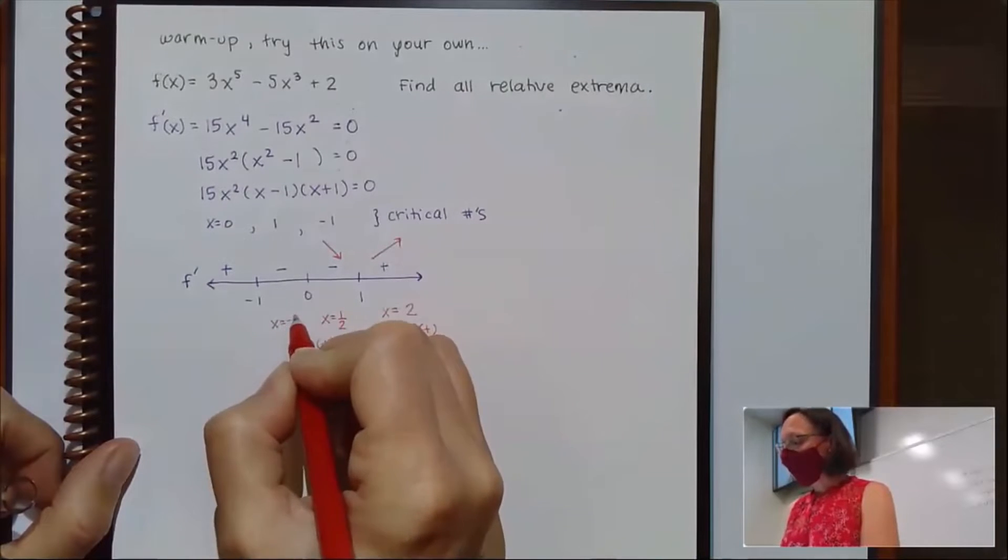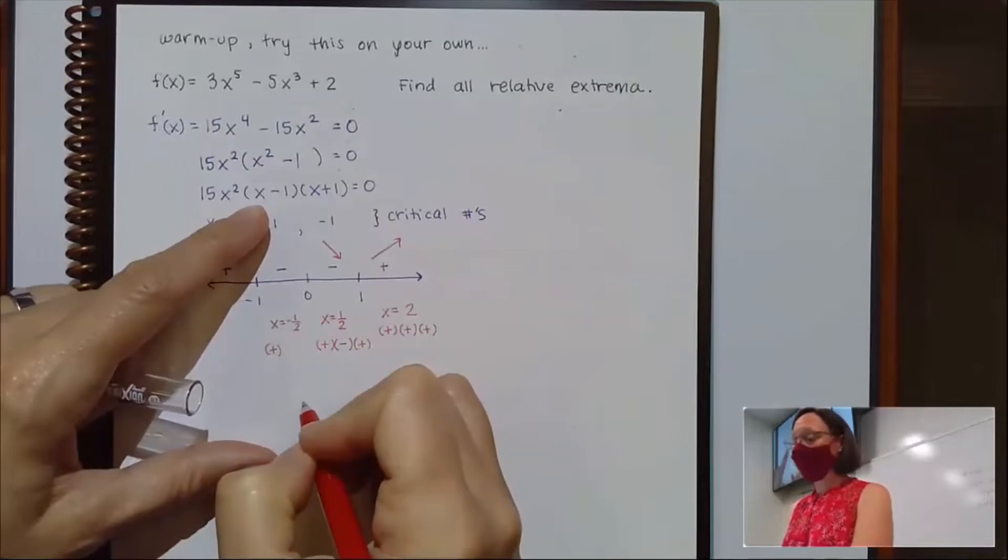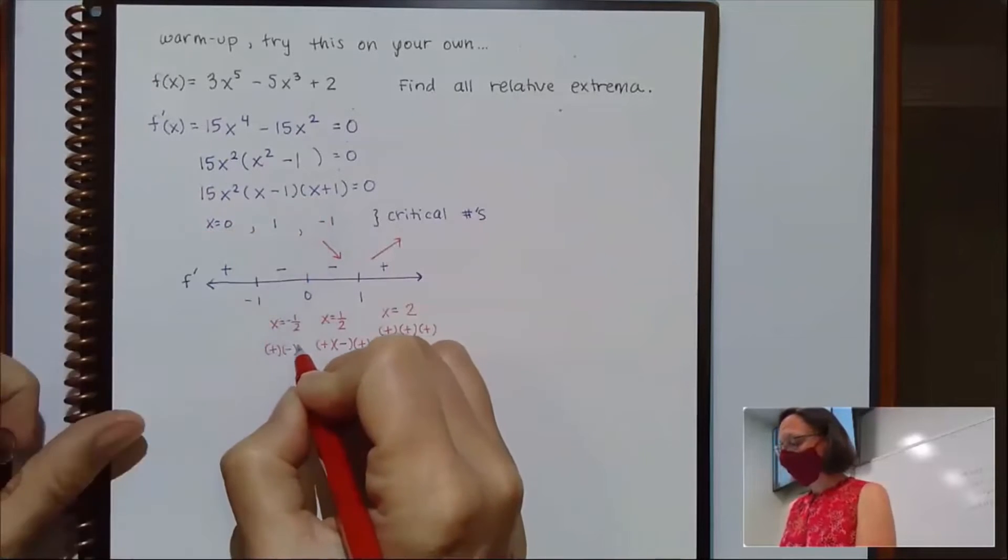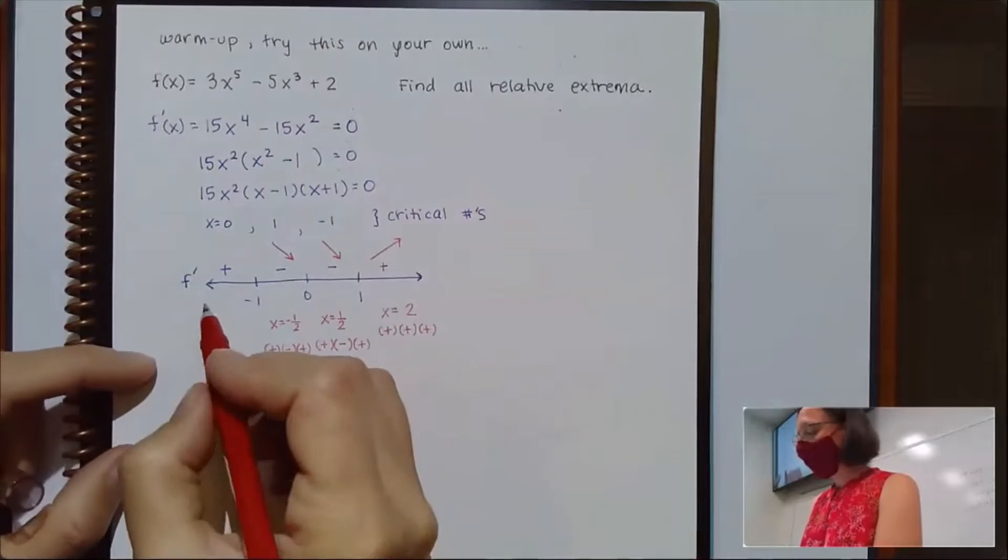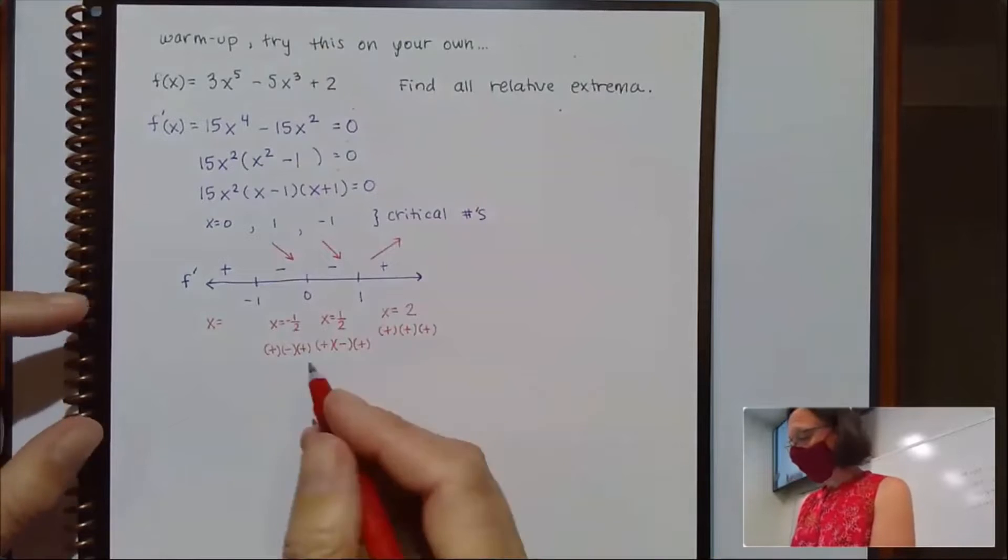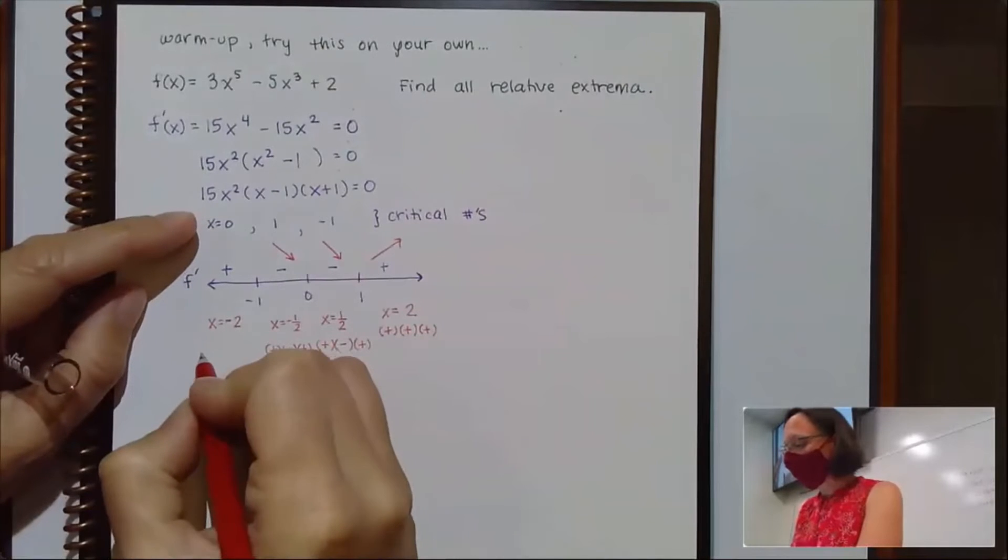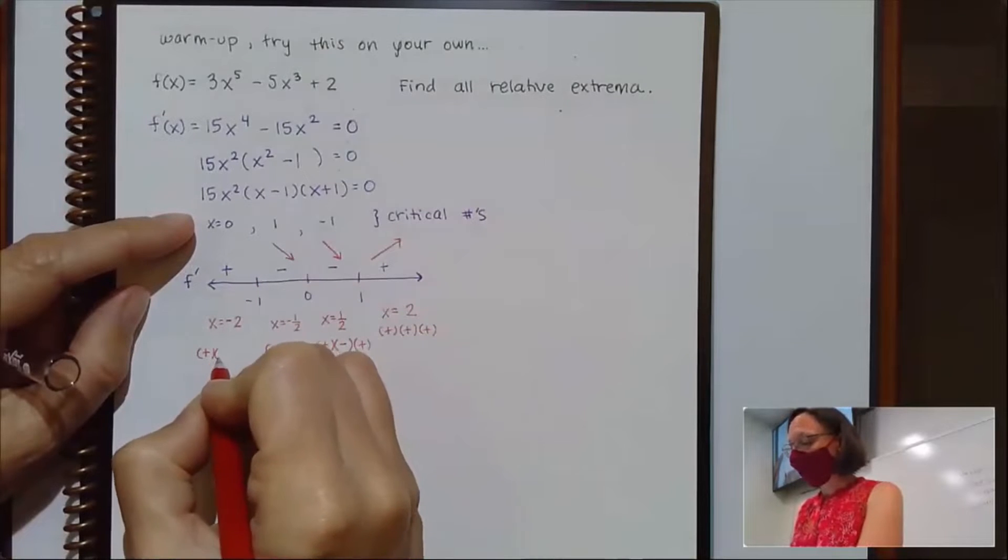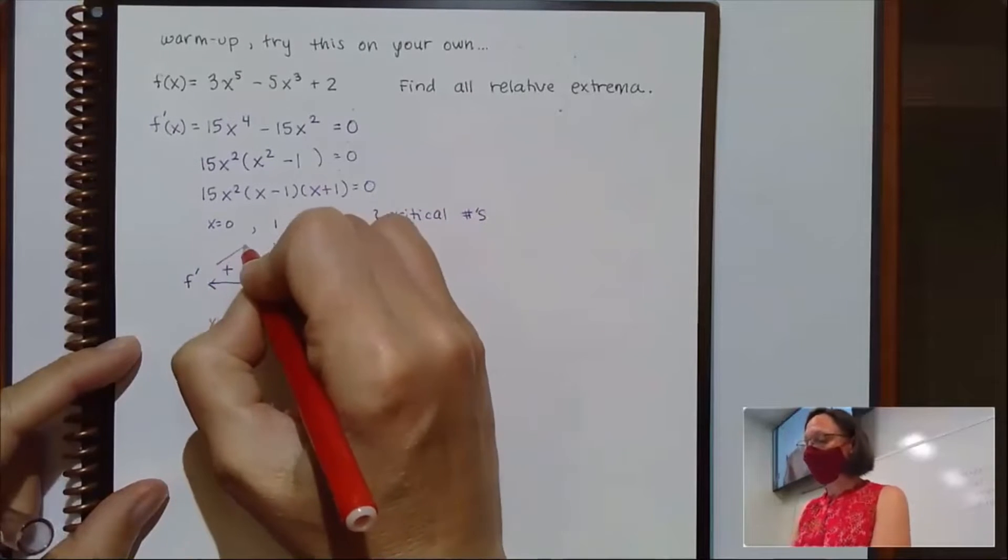If I choose negative 1/2, super similarly, when I square it, it's positive. Negative 1/2 - 1 is negative. And negative 1/2 + 1 is positive. So overall, that's a negative, and I'm going down. If I pick something over here, I'll just pick negative 2. Negative 2 squared is positive. Negative 2 - 1 is negative. And negative 2 + 1 is also negative. So overall, that gives me a positive.